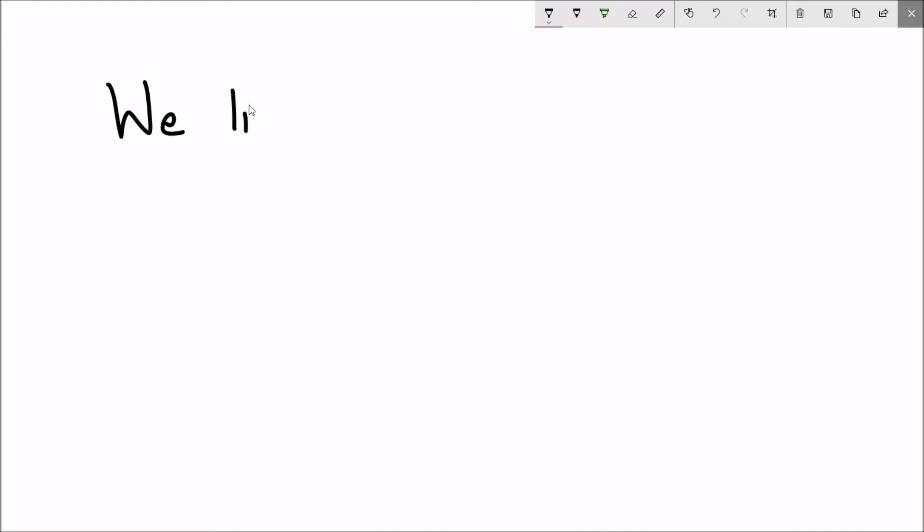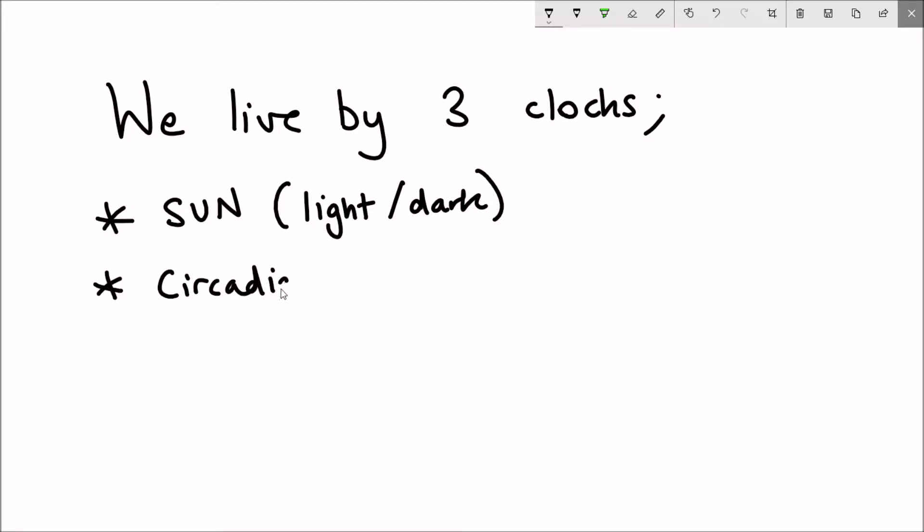Before I jump straight in, it's important to recap what the three main clocks are. First we have the sun, the light-dark cycle. Secondly, it's our intrinsic circadian clock. But lastly and important for this video is the social clock and how we often live our lives out late at night in conditions of artificial lighting, which antagonizes the other clocks. This can be referred to as social jet lag.